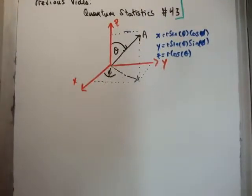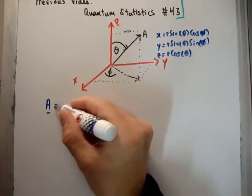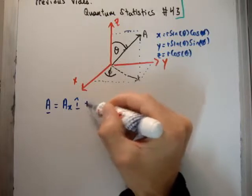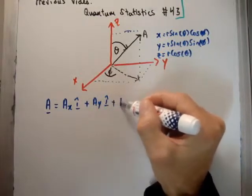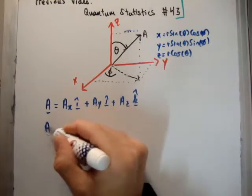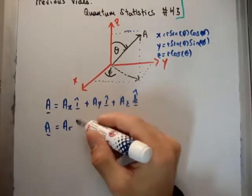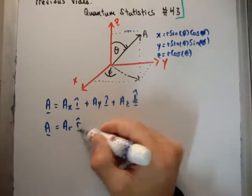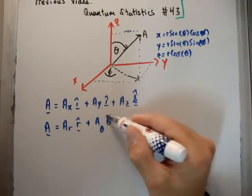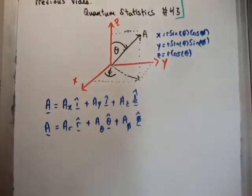So, where do we go from here? Well, what we do is we note that any vector can be written as follows. In rectangular coordinates, it's A sub x in the i hat, A sub y in the j hat, and A sub z in the k hat direction. But in our spherical polar coordinates, we write it as A sub r in the r hat direction, so that's the radial direction. A sub theta in the theta hat direction, and A sub phi in the phi hat direction.